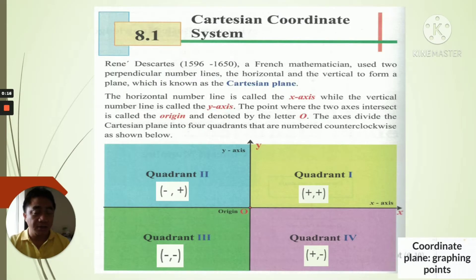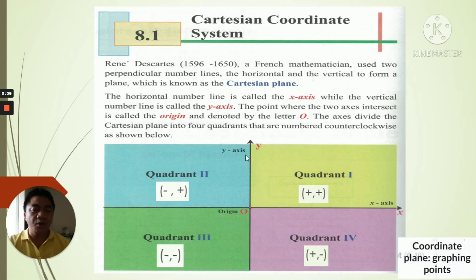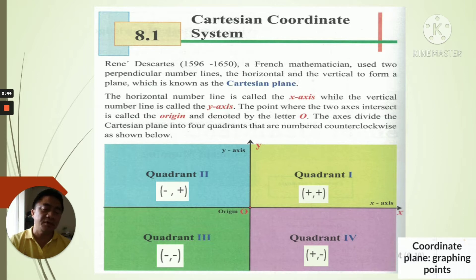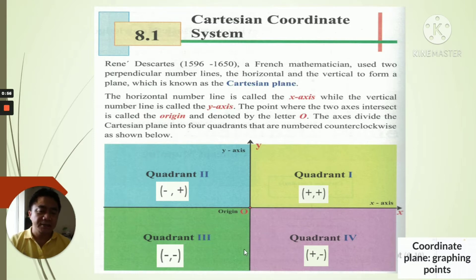Here again are our slides — this is a recap of what we learned last meeting. We have the Cartesian coordinate system with the x-axis as the horizontal number line and the y-axis as the vertical number line. On the number line, going right is positive and going left is negative; going up on the y-axis is positive and going down is negative.